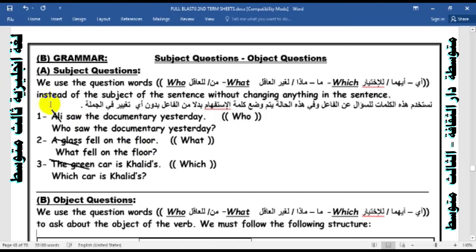For example, number one: Ali saw the documentary yesterday. Who can ask by using who? Yes. Who saw the documentary yesterday? We dropped Ali.